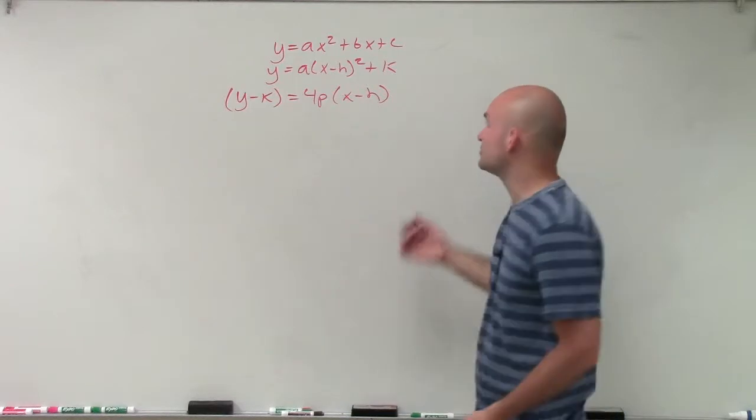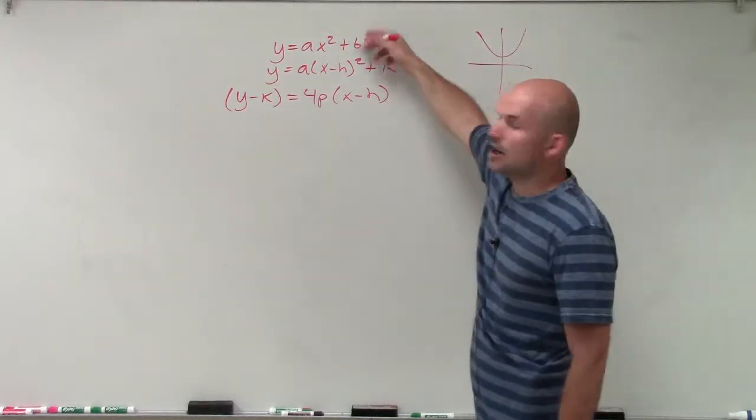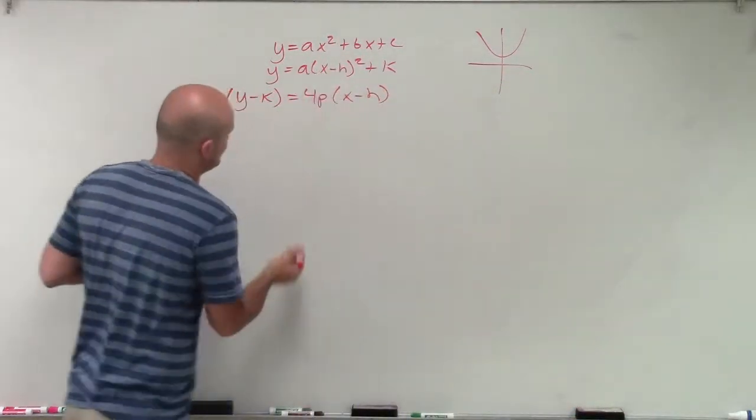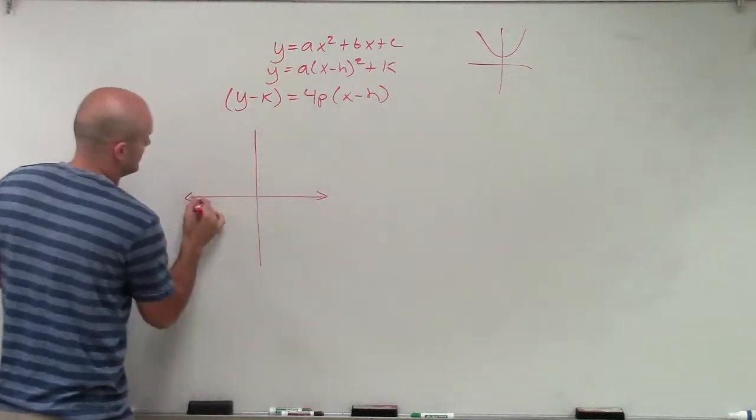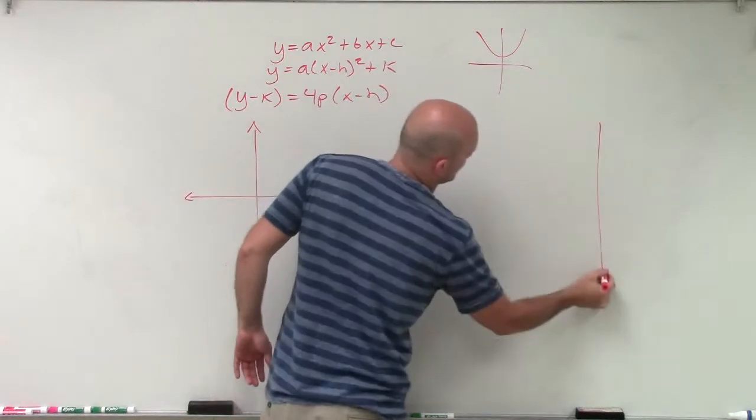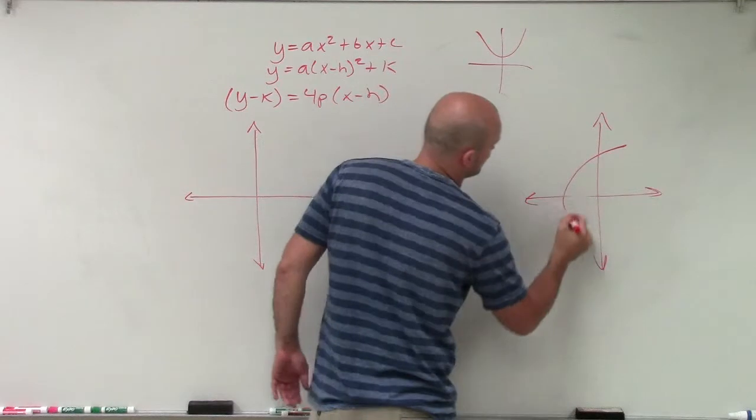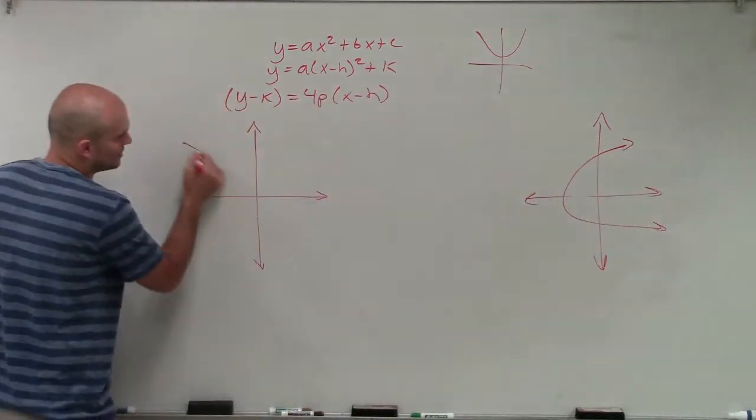So we know that a general parabola, if we're just going to look at one of these, we know it opened either up or opened down. But I'm telling you this equation represents a parabola that opens sideways or horizontally. So let's go and take a look at what if this equation opened to the right and what if this equation opened to the left.